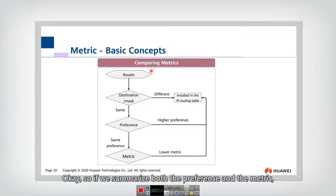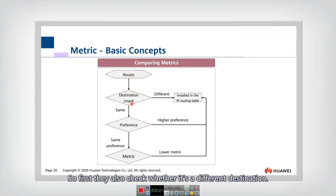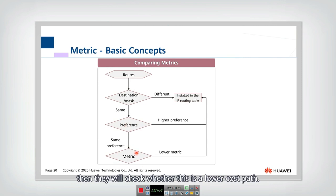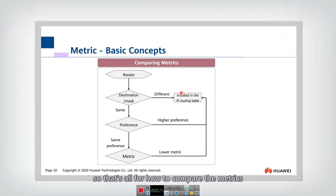To summarize both preference and metric: when adding routing entries, the router first checks whether the destination is different — if different, it installs directly. If the preference is higher than the existing entry, it installs the new entry. If the preference is the same, it checks whether the new path has a lower cost. If it has a lower metric, it installs it. That covers how to compare metrics and decide whether to add an entry into the routing table.